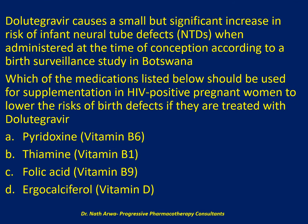The next question reads: dolutegravir causes a small but significant increase in risk of infant neural tube defects (NTDs) when administered at the time of conception, according to a birth surveillance study in Botswana, Africa. Which of the medications listed below should be used for supplementation in HIV-positive pregnant women to lower the risk of birth defects if treated with dolutegravir? Is it vitamin B6, B1, B9, or vitamin D?